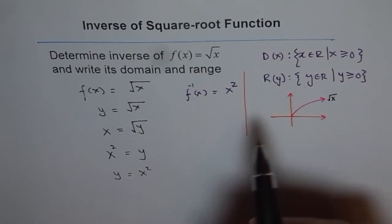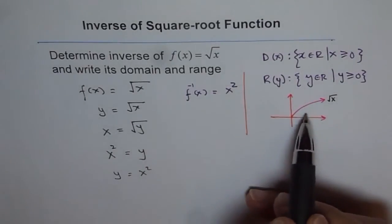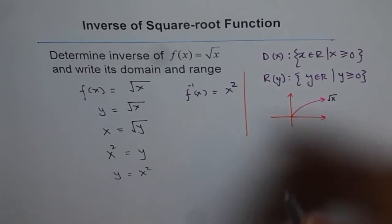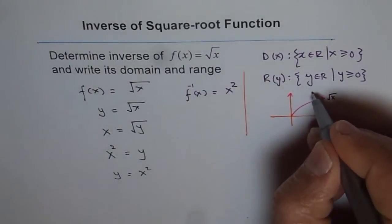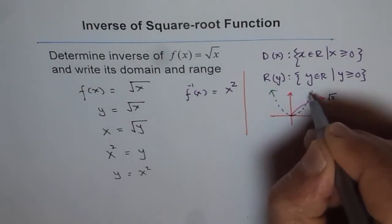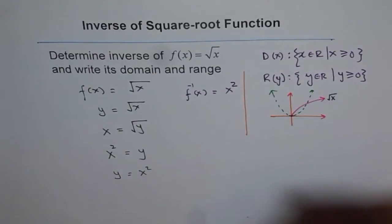If this is your square root x, then how come x square becomes its inverse? Yes, that is to be thought about. What is x square? x square is a function which is kind of like this. So how could this function be inverse of that?